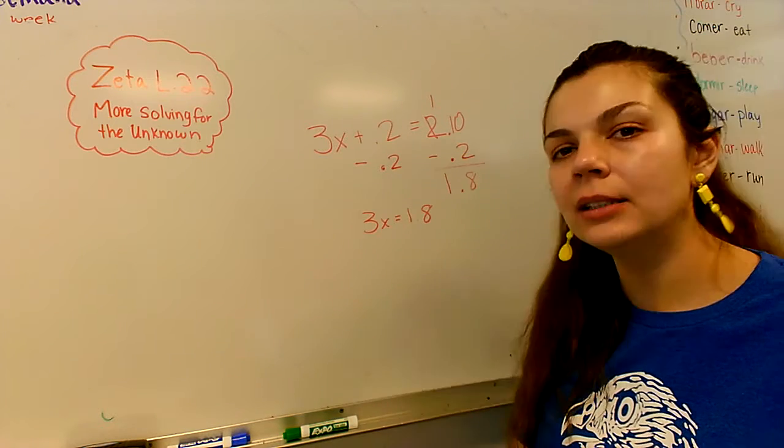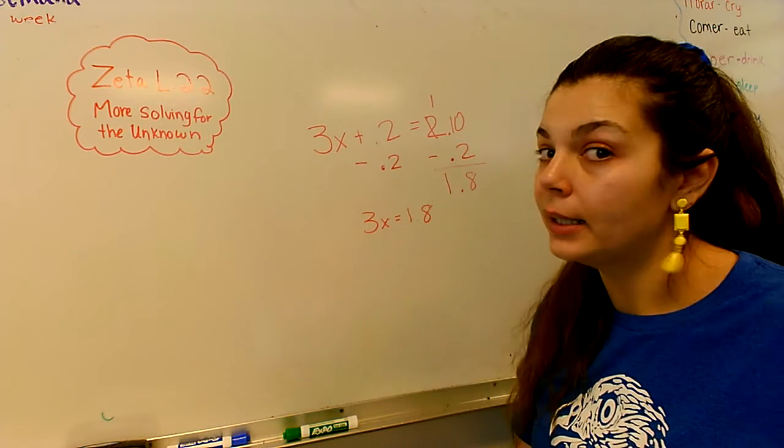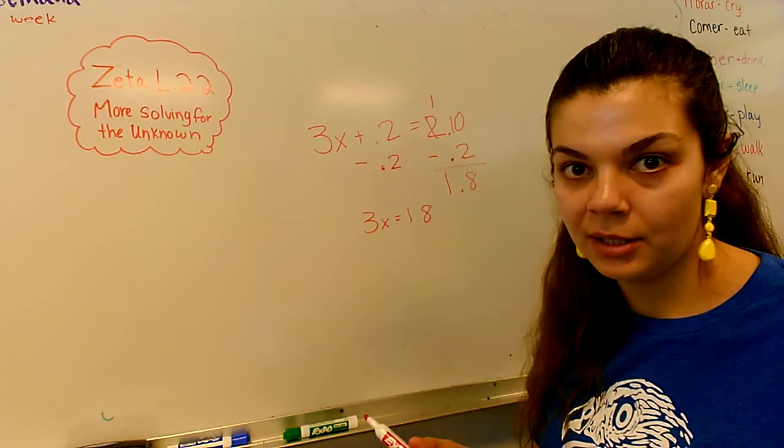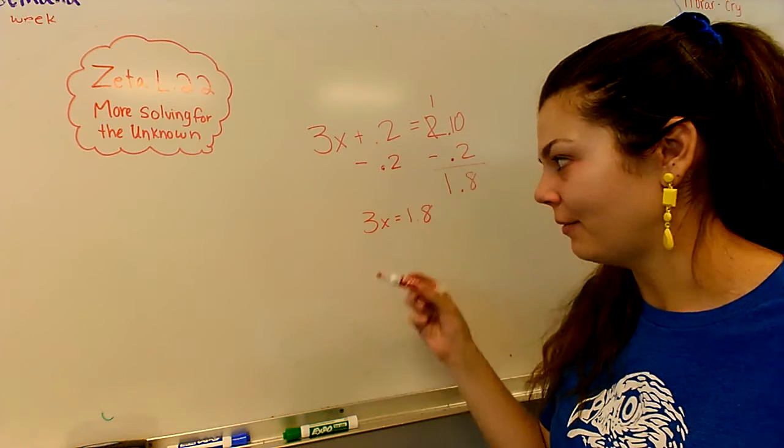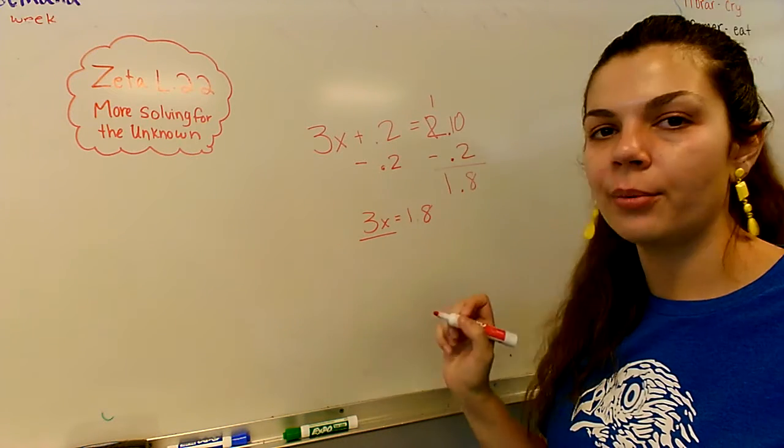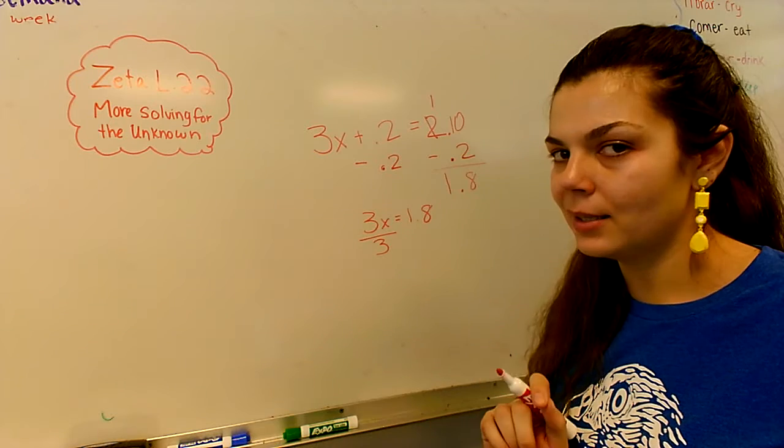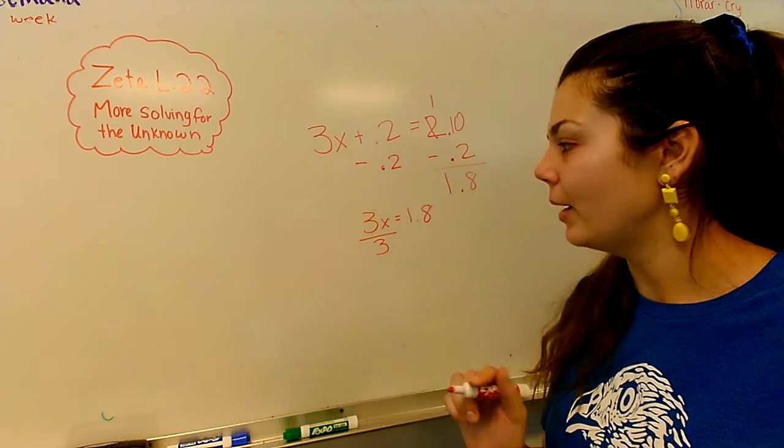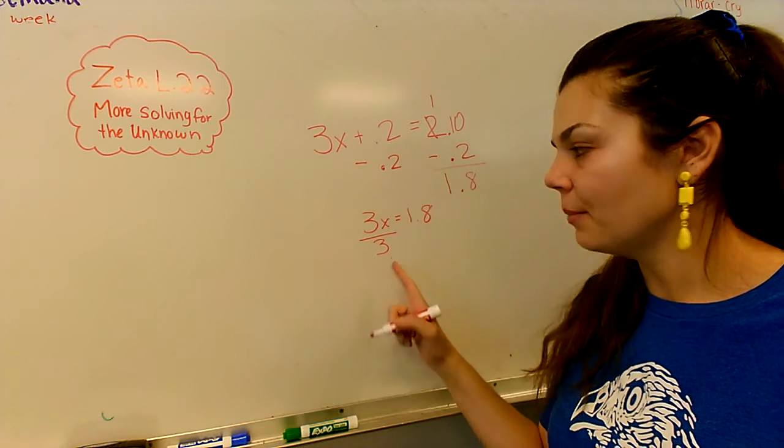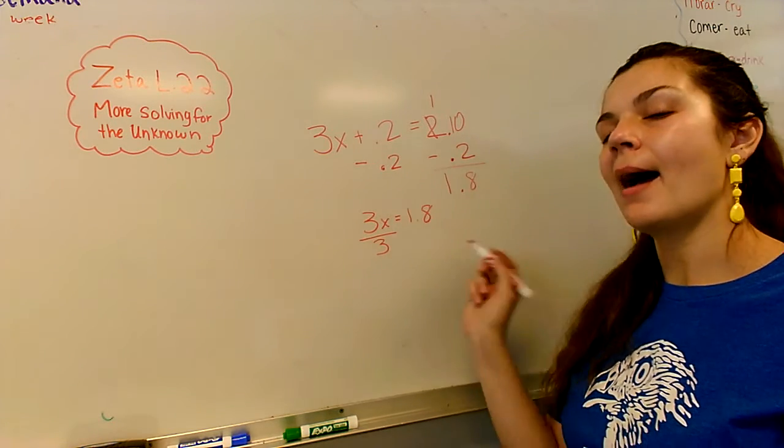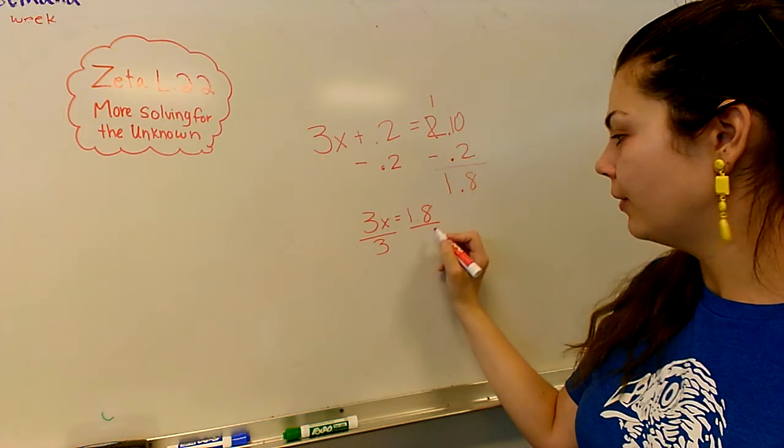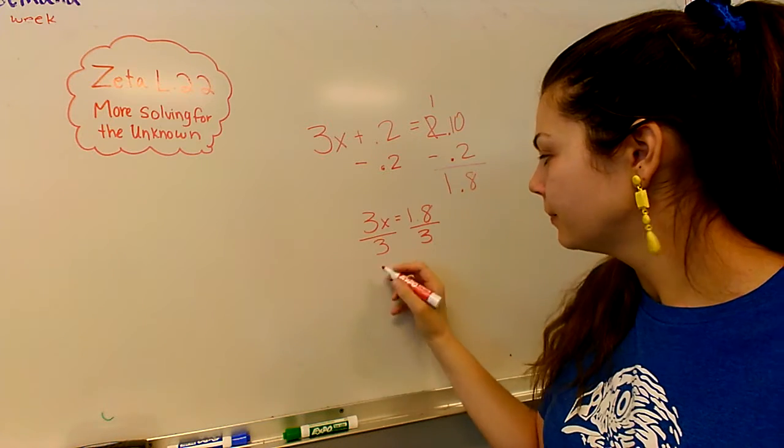All right, I still need my variable x. I need it on its own. So what do I need to do? Get it on its own. I have to figure it out. I'm going to divide 3x by 3. I want that x alone, and that 3 is the only thing in my way. If I do something to one side, I have to do it to the other. Divide by 3.